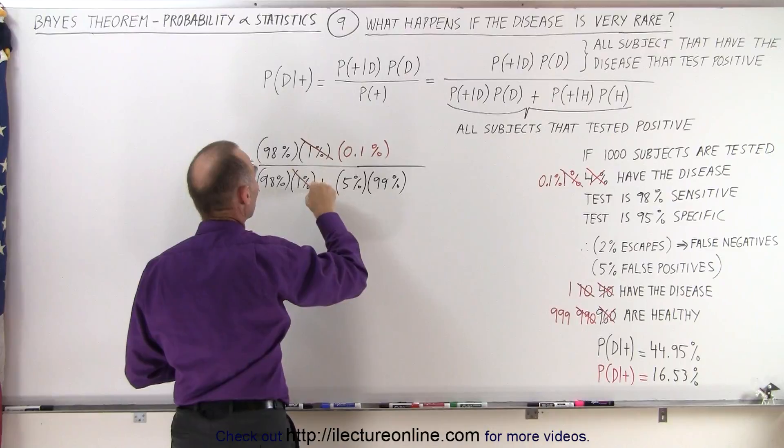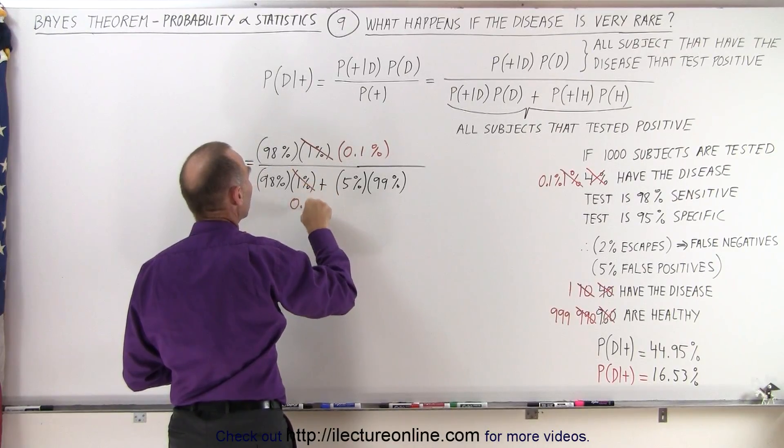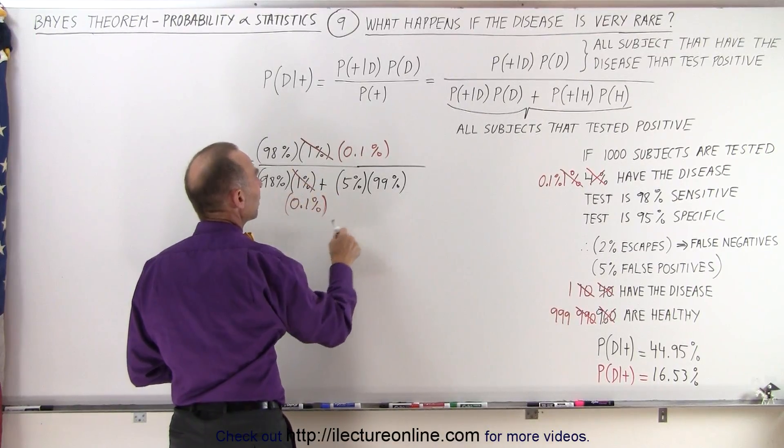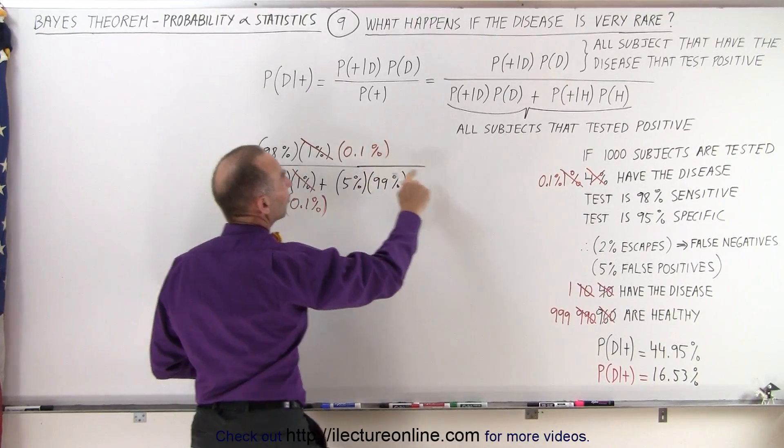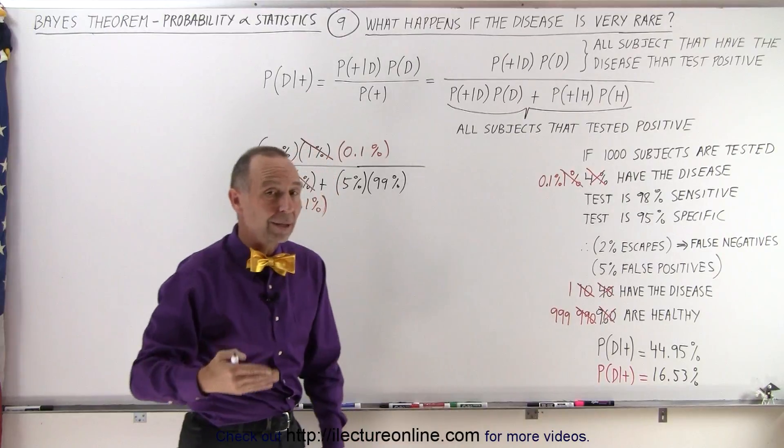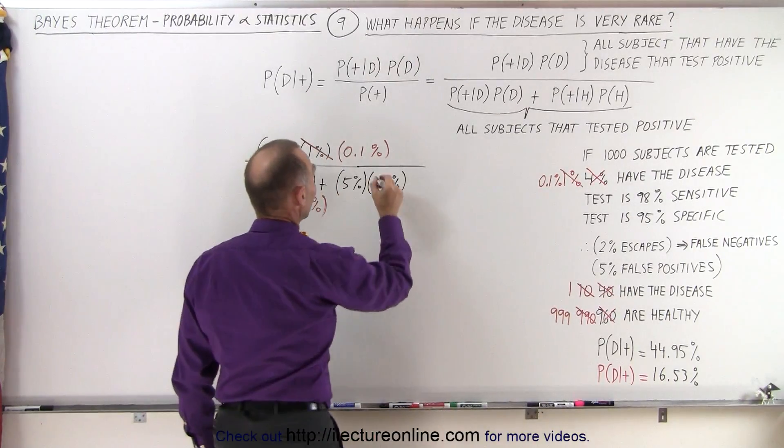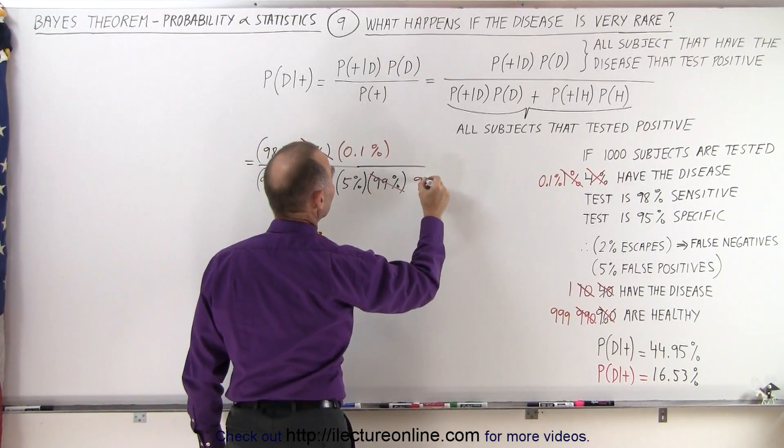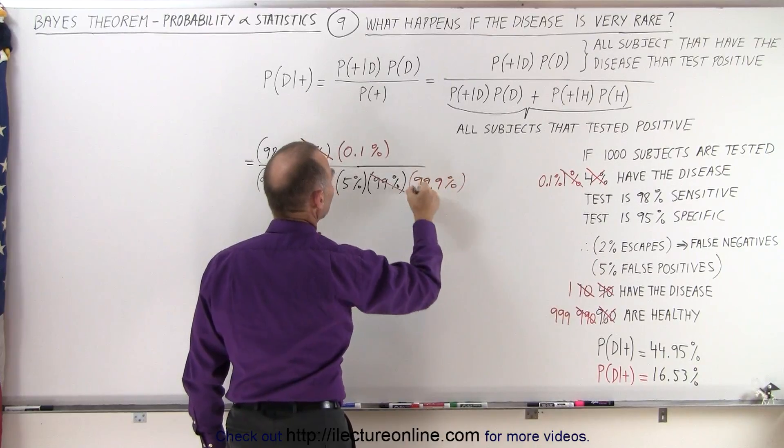And over here, instead of 1%, that would be 0.1%. And likewise, what would be the probability that the person tested would be healthy? Instead of 99%, that would now become 99.9%. So this would change to 99.9%.